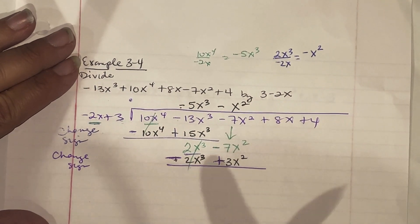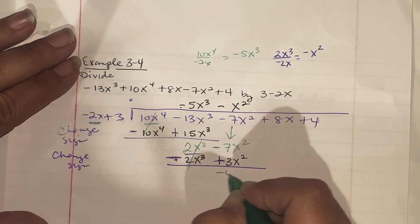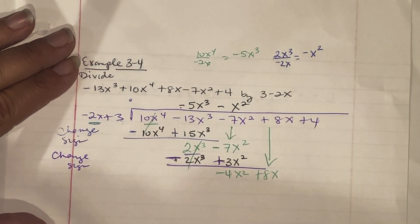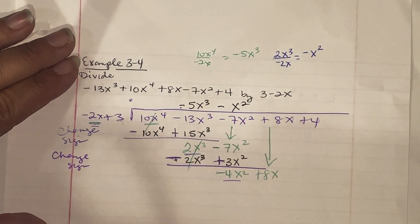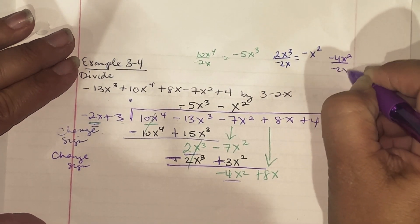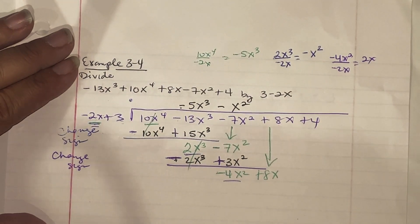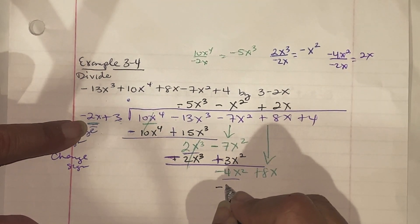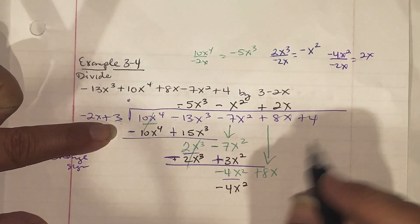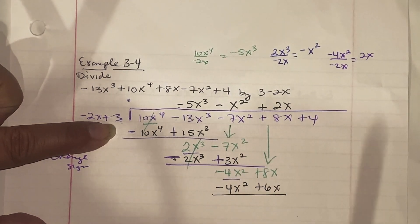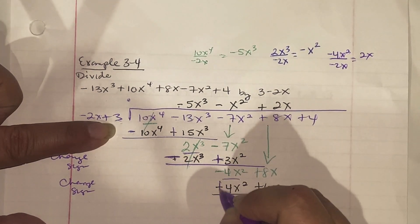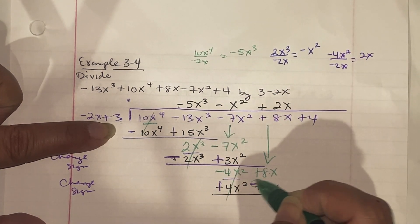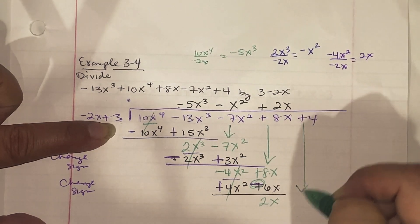Negative 7 plus 3 gives negative 4x squared. Slide down the plus 8x. Repeat again: negative 4x squared divided by negative 2x gives positive 2x. Write positive 2x on top. Multiply: 2 times negative 2 gives negative 4x squared, and 2 times 3 gives positive 6x. Change the signs — negative 4x squared cancels. 8 minus 6 gives 2x. Bring down positive 4.